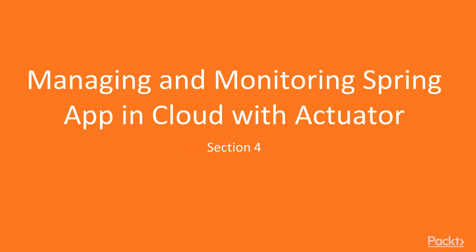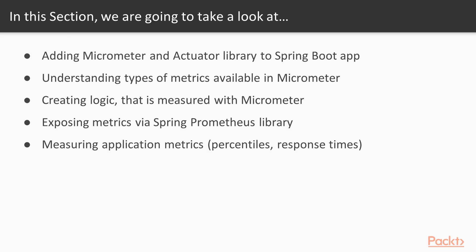Welcome to the fourth section of our course. In this section we will learn how to manage and monitor a Spring app in the cloud with Actuator. First we will be adding Micrometer and Actuator library to the Spring Boot app. Then we will understand the types of metrics available in Micrometer, and create logic that is measured with Micrometer. In video number 4 we will be exposing those metrics via the Spring Prometheus library. Finally, we will see how to measure application metrics of percentiles and response times.